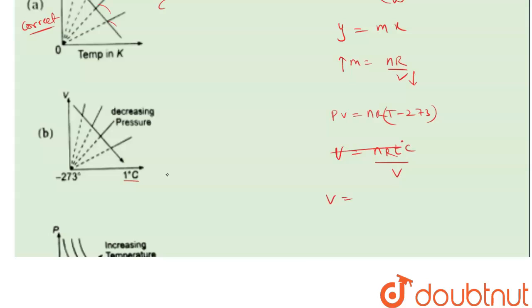So this is nR T degree centigrade upon P minus nR 273 upon pressure.